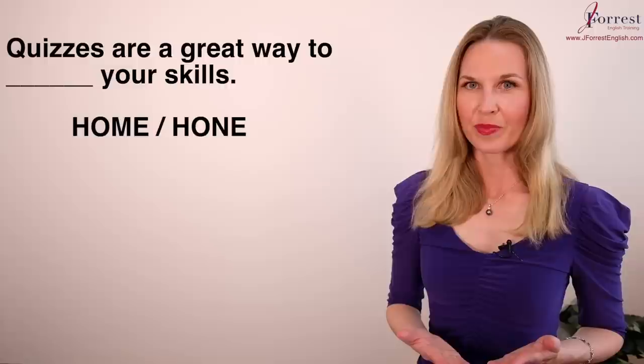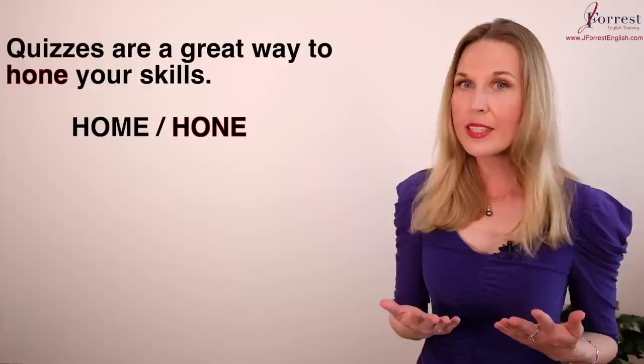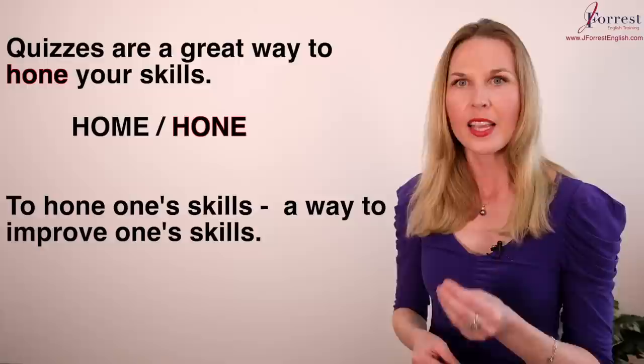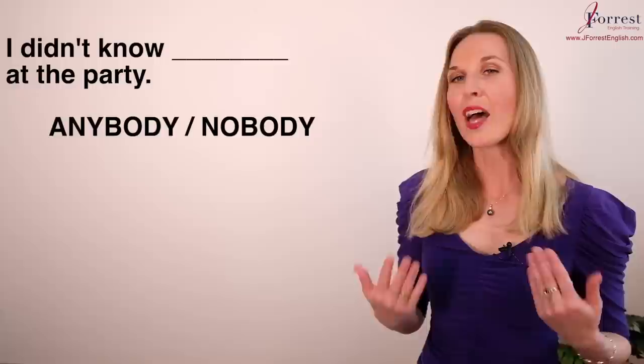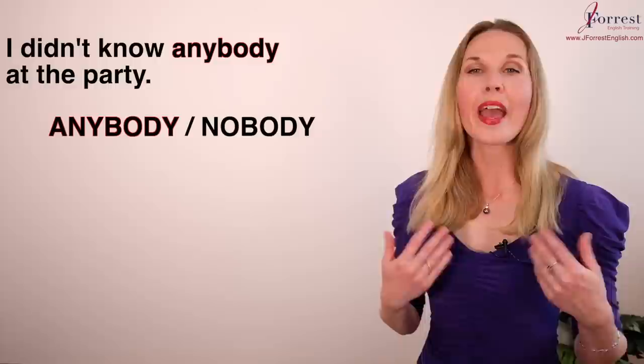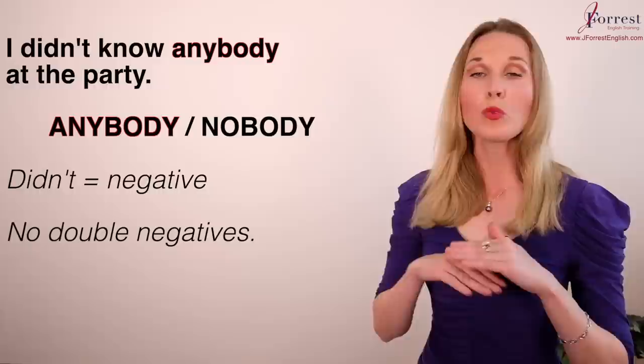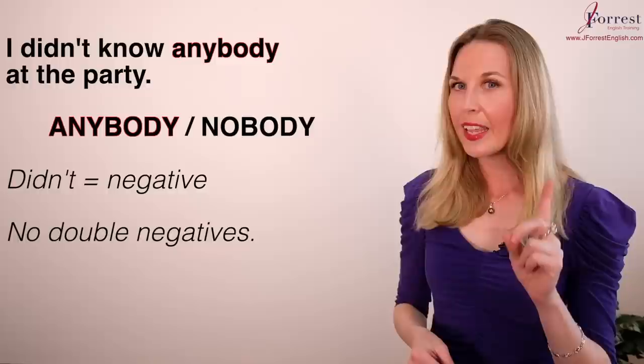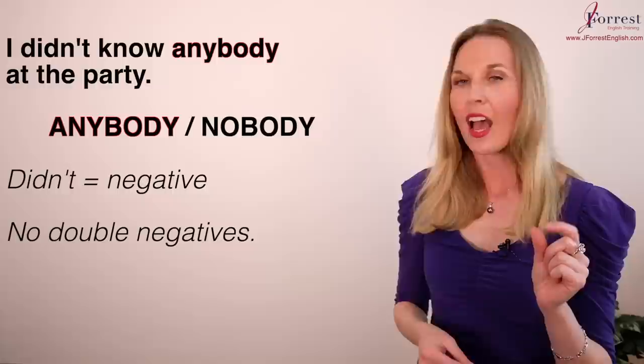Number five: Quizzes are a great way to hone your skills. The correct choice is 'hone'. To hone one's skills simply means to improve one's skills. Number six: I didn't know anybody at the party. 'Didn't' is negative, and in English we do not use double negatives — you can only use one negative in a clause. Since I already have 'didn't', I can't use 'nobody'; I have to use 'anybody'.